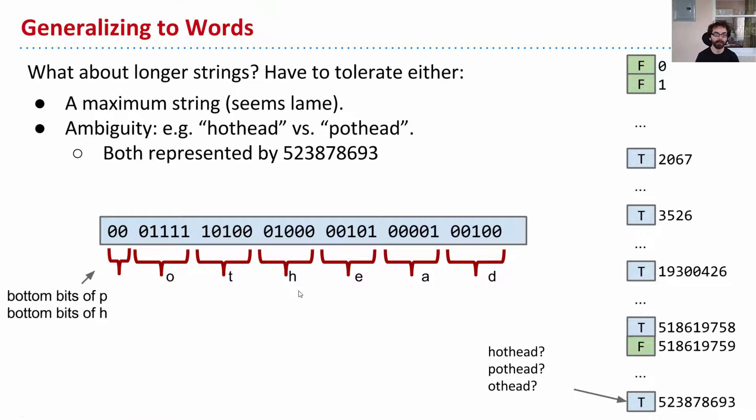So let's suppose, then, we have longer strings. Well, one thing we could do is have a maximum string and just say, you can't get longer than something. But we also have ambiguity. Like, a hothead, you know, an angry person, would, as it turns out, have the exact same numerical representation as pothead, which is different. That's not somebody who's particularly angry, but instead someone who smokes a lot of weed. So here is basically the reason that comes up. So this is hothead. And it turns out that both P and H, the bottom two bits of it, are 0. And so there's just nowhere to put the information about H versus P. So this could be hothead, pothead, othead. Those numbers, all of those words will index to the same position here.